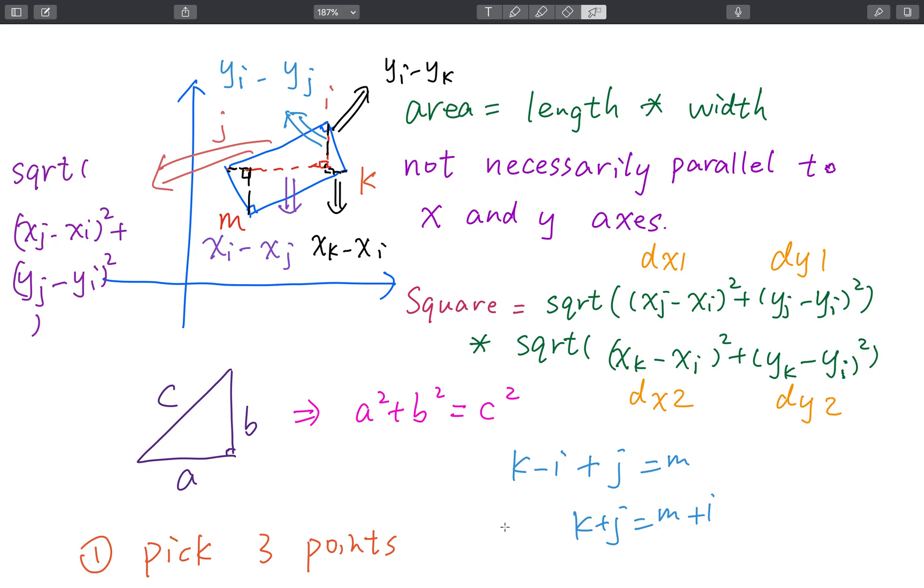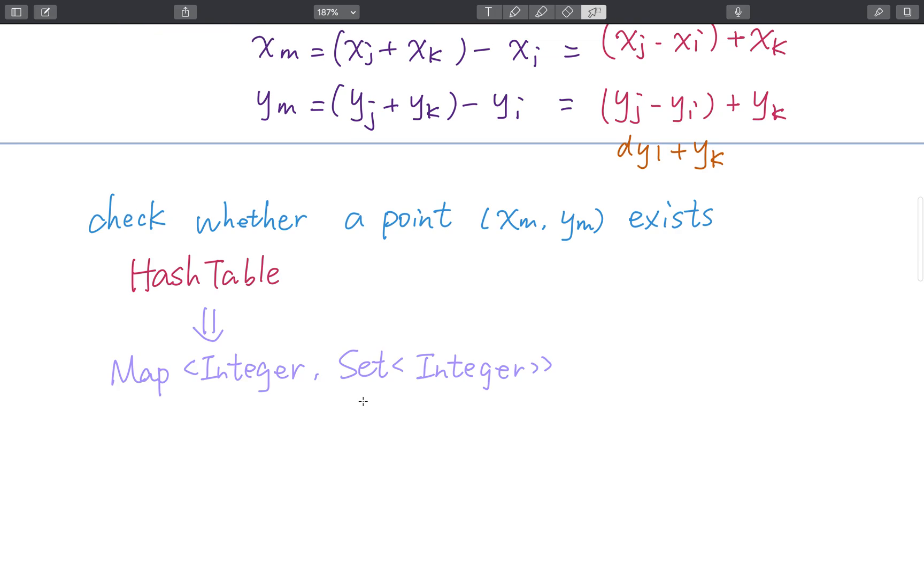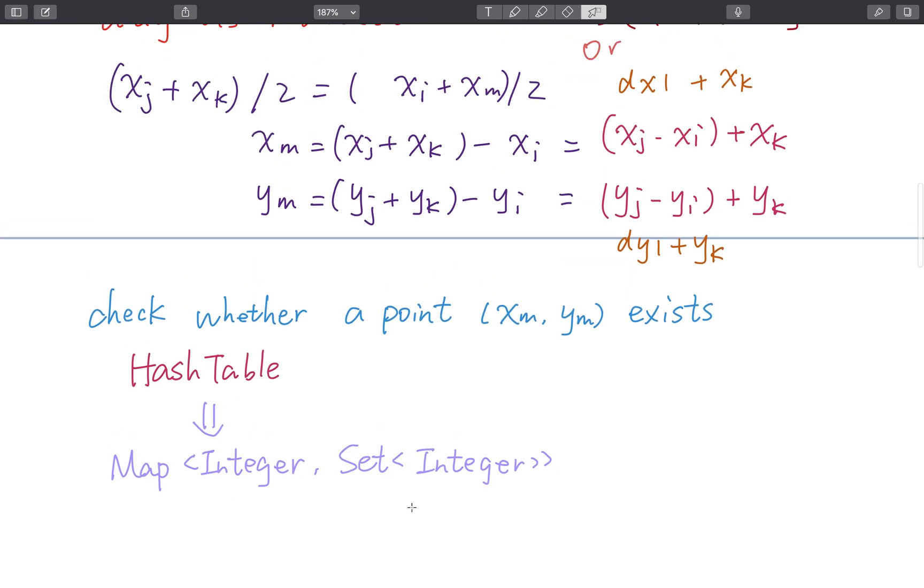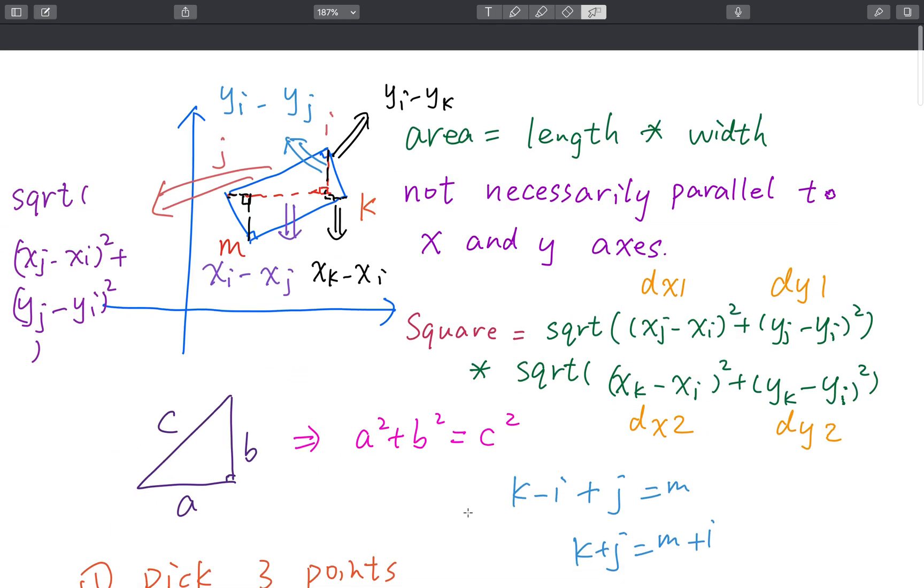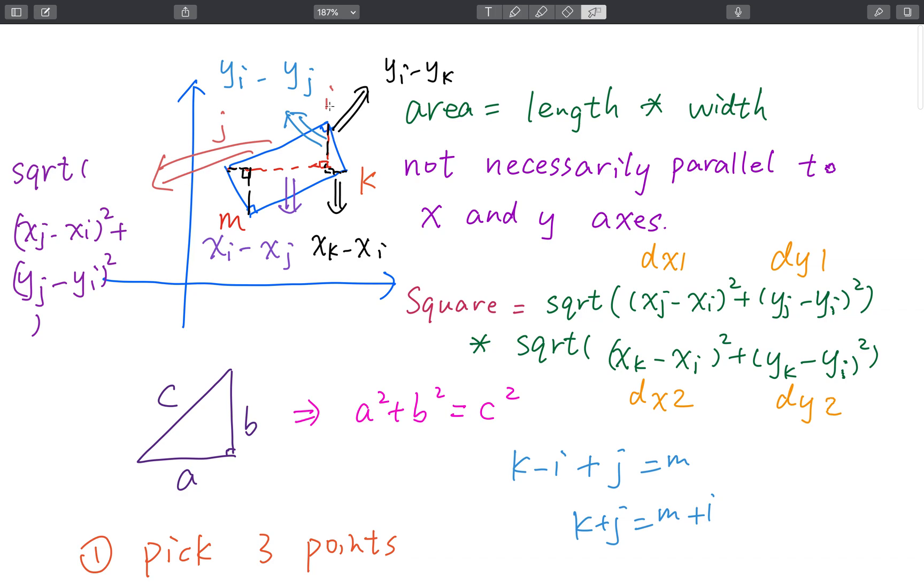So this algorithm is straightforward. We first put all the points to that map. And then secondly, we iterate the I from 0 to N, because we will try to treat it as the point of the right triangle. And then we try to find another two points which can form a 90 degree here.